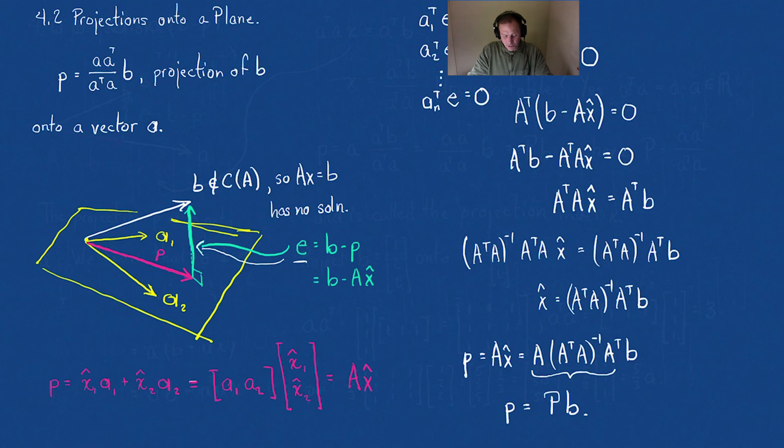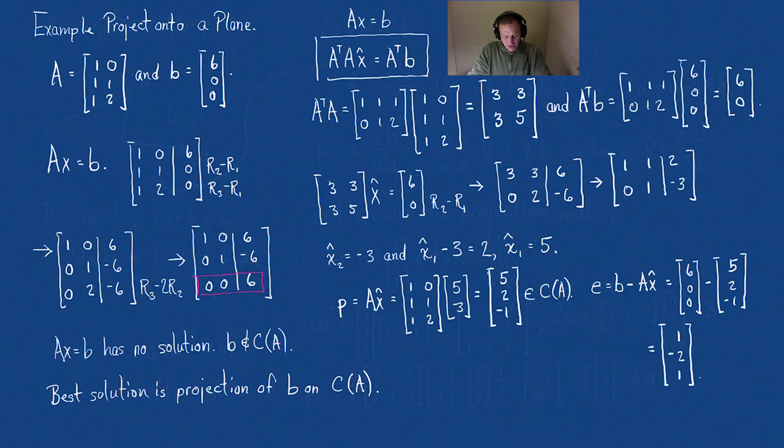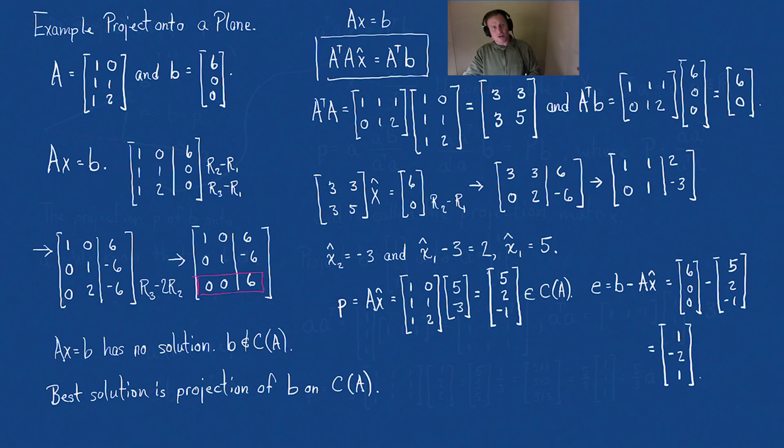Let's check. This is a great way to know if your calculations are correct. If I take A transpose e, this is going to be [1,1,1; 0,1,2] times [1,-2,1]. In the first component you're going to have 1 minus 2 plus 1, and the next one is 0 minus 2 plus 2. Sure enough, that is the zero vector.